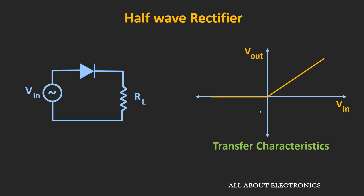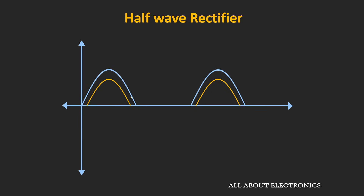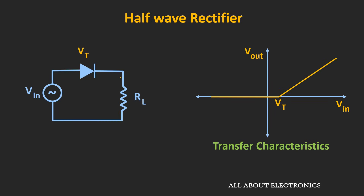Whenever the input is negative, the output will be zero. And whenever input is positive, the output will follow the input signal. But in an actual rectifier circuit, the diode will conduct only when the applied input signal is more than the forward voltage drop across the diode. If you see the actual waveform of the rectifier, the peak will be slightly less than the ideal rectifier output. And if you see the transfer characteristic, it will look like this.